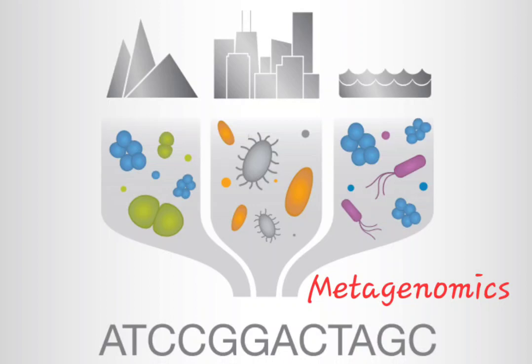Metagenomics is defined as the direct genetic analysis of genomes contained within an environmental sample. The field initially started with the cloning of environmental DNA, followed by functional expression screening, and was then quickly complemented by direct random shotgun sequencing of environmental DNA. The process of metagenomics consists of four main steps: sampling and DNA extraction, sequencing, analysis, and visualization.